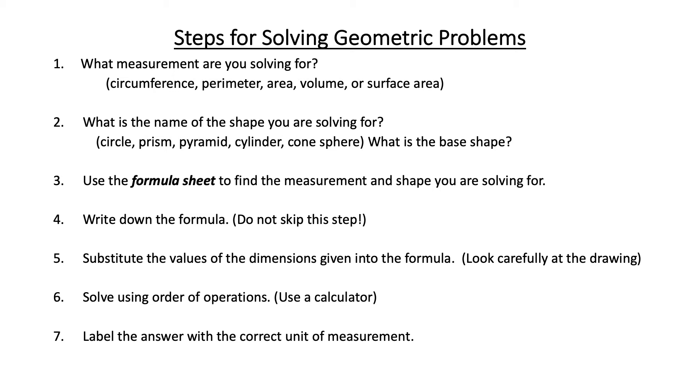Then we're going to label the answer with the correct units of measurement. If you're calculating circumference or perimeter, it's just units because these are measures of length. If you're measuring area or surface area, you use units squared since area and surface area are two dimensions. For units cubed, we use this to solve for the volume. Volume is a three-dimensional measure.